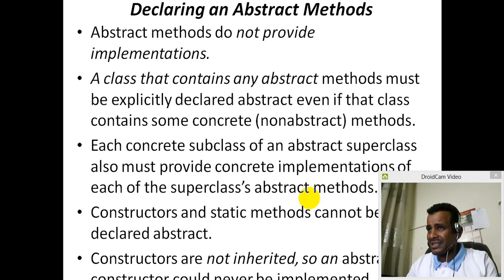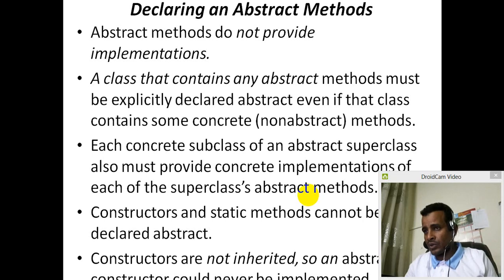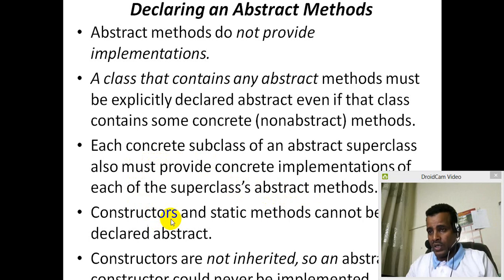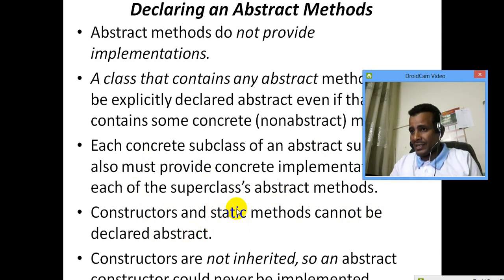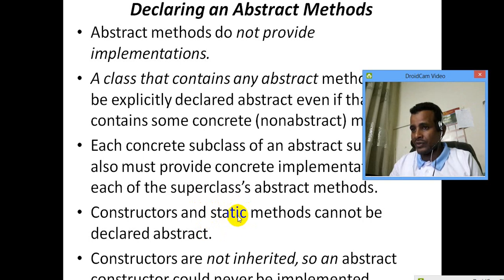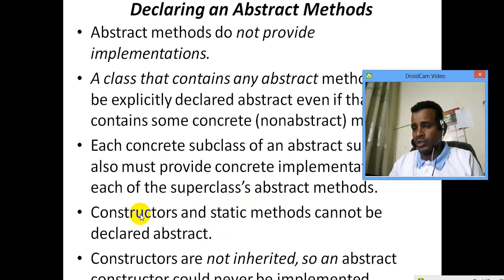What is an abstract method? It is a subclass. Constructors and static methods cannot be declared abstract. The static method is created. The DISP is created — the static method is established in the custom concept and the structure is created.